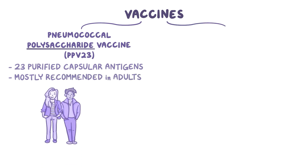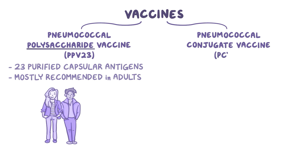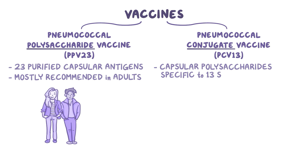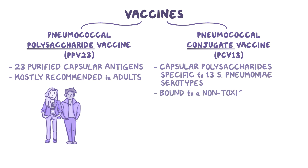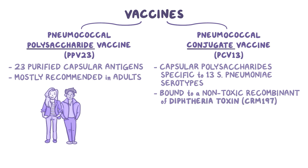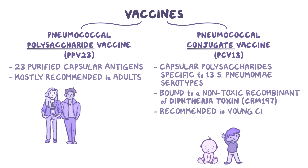Another category is the pneumococcal conjugate vaccine, or PCV13, which contains the capsular polysaccharides specific to 13 strep pneumoniae serotypes, bound to a non-toxic recombinant variant of the diphtheria toxin called CRM197, which serves as a carrier protein. PCV13 is recommended in young children.